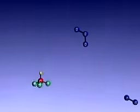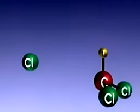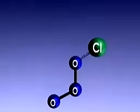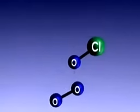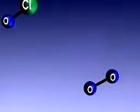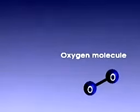First, high energy ultraviolet rays break chlorine atoms free from the CFC molecule. These free chlorine atoms can react with other molecules in the atmosphere. When a chlorine atom reacts with an ozone molecule, it steals one of the ozone molecule's three oxygen atoms, forming a molecule of chlorine monoxide. The remaining two oxygen atoms form an ordinary oxygen molecule. In this way, an ozone molecule is destroyed.